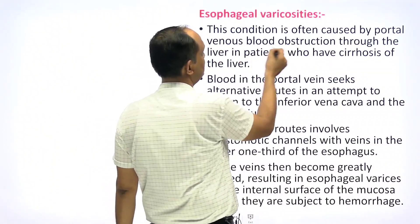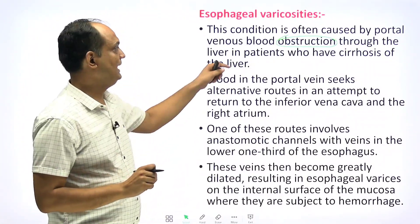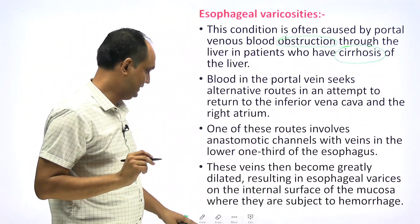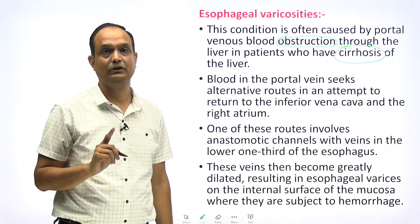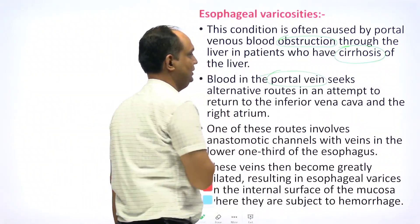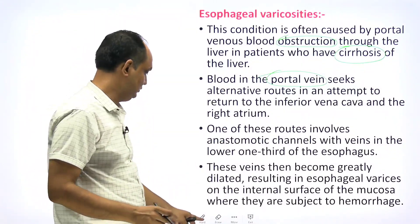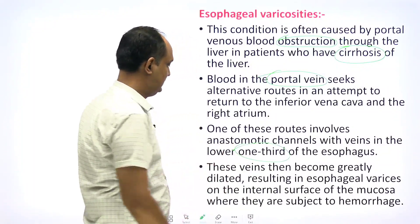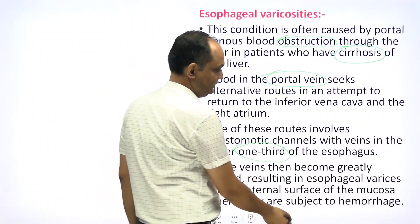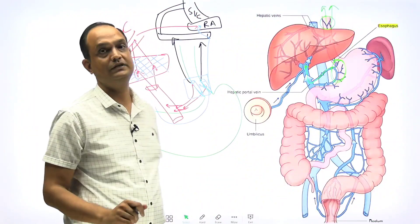So, esophageal varices is caused by portal venous blood obstruction. The site of obstruction is the portal vein, and the cause is liver diseases like cirrhosis. The blood in the portal vein seeks an alternative route to reach the right atrium through the anastomosis at the lower one-third of the esophagus. These veins become greatly enlarged — varicose veins — and are subjected to hemorrhage.